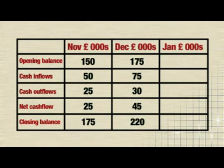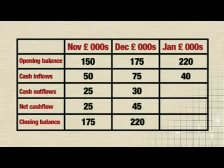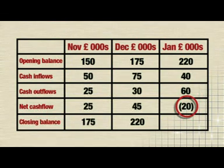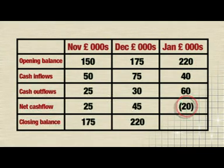Now let's do January. The opening balance will be £220,000 because that was December's closing balance. This time, they have fewer inflows — only £40,000 this month — but their outflows have increased to £60,000. This means when outflows are taken away from inflows, we're left with minus £20,000, which is shown by putting brackets around the figure. Then the opening balance of £220,000 plus the net cash flow of minus £20,000 gives a closing balance of £200,000. In some exercises, you might have to work out what the inflows and outflows are by adding up what monies were received or what payments were made.